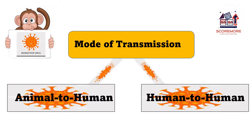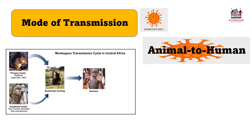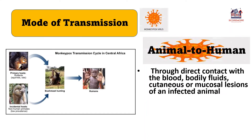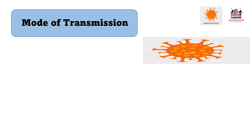Type number one, animal to human: through direct contact with the blood, bodily fluids, cutaneous or mucous lesions of an infected animal, or by eating insufficiently cooked meat from an infected animal. Type number two, human to human.